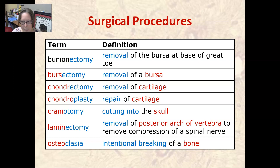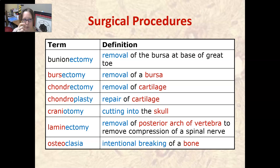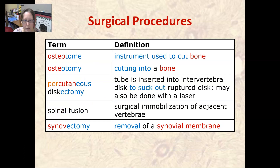A laminectomy is the removal of the posterior arch of the vertebra to relieve compression of a spinal nerve. By removing part of that bone, you allow more space for the nerve. Osteoclasia is the intentional breaking of a bone.